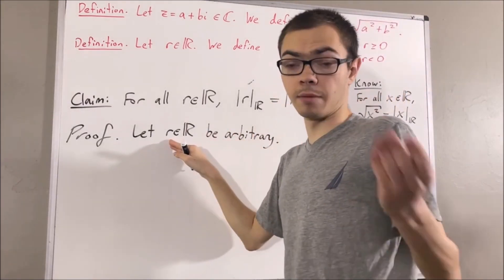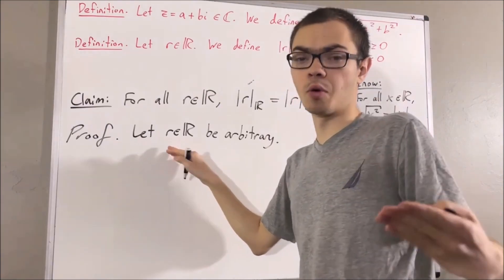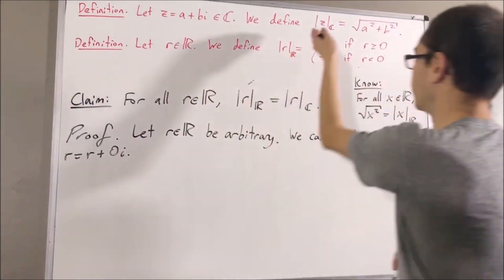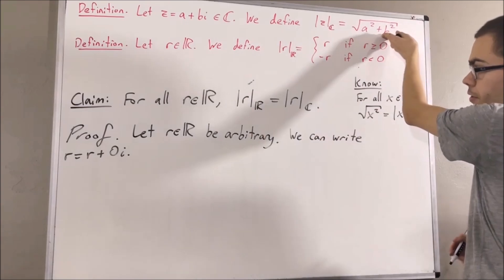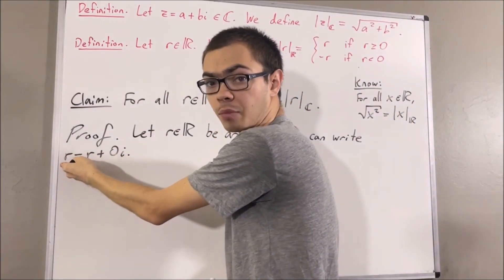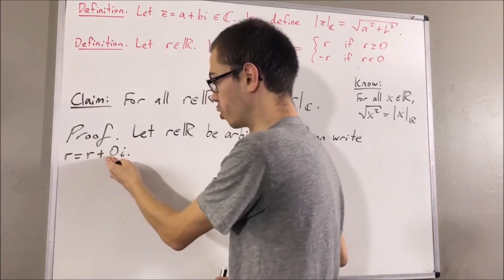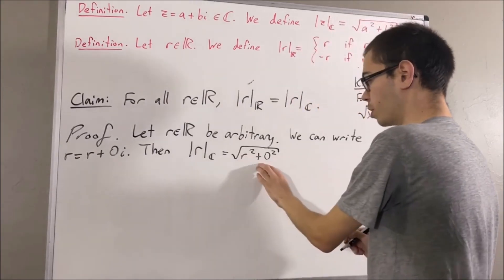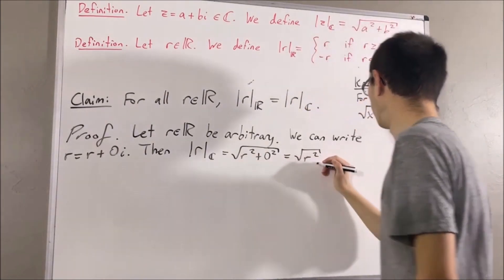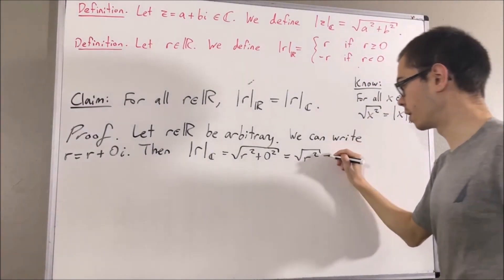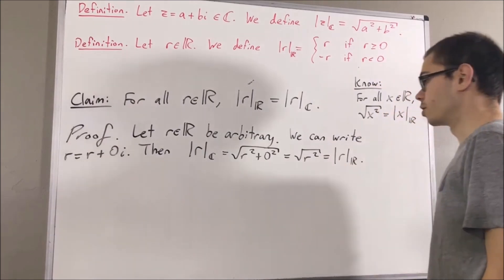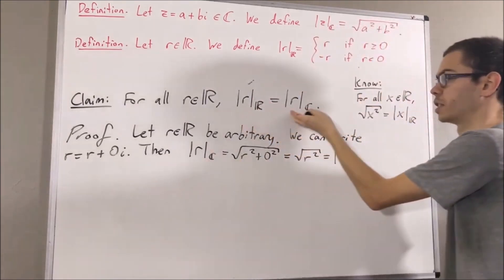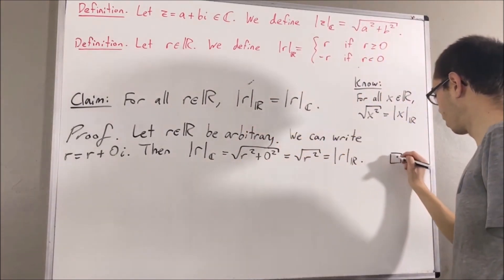We can think of r as the complex number r plus zero i. Applying the definition of complex absolute value, the absolute value of r in the complex sense is just the square root of r squared plus zero squared. But r squared plus zero squared is just r squared, and by our preliminary result, the square root of r squared is the absolute value of r in the real sense. So we have shown that the absolute value of r in the real sense equals the absolute value of r in the complex sense, which is exactly what we wanted to show.